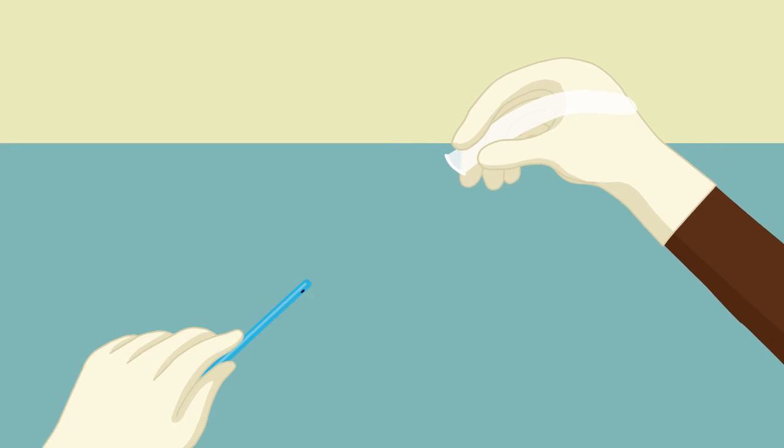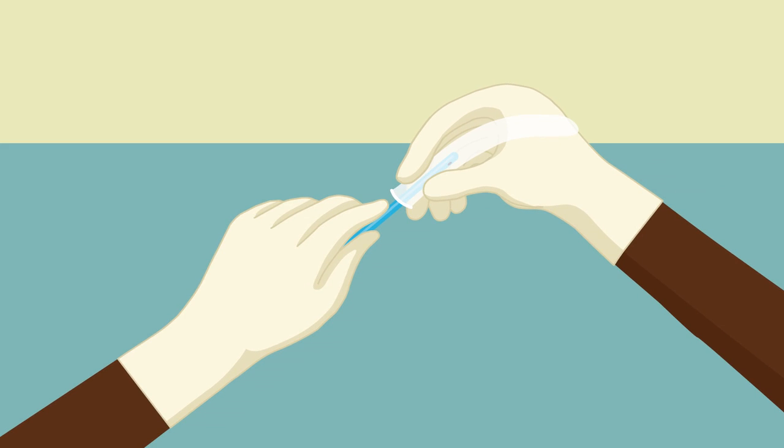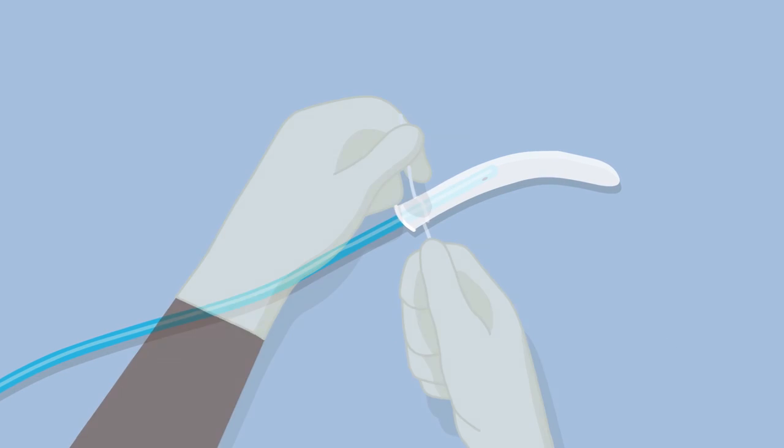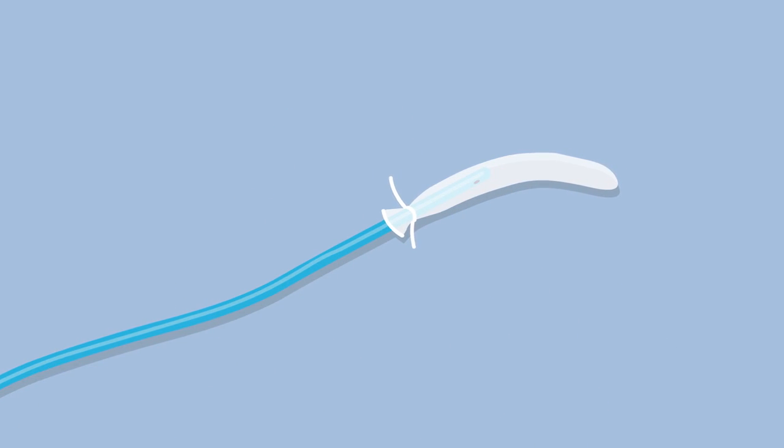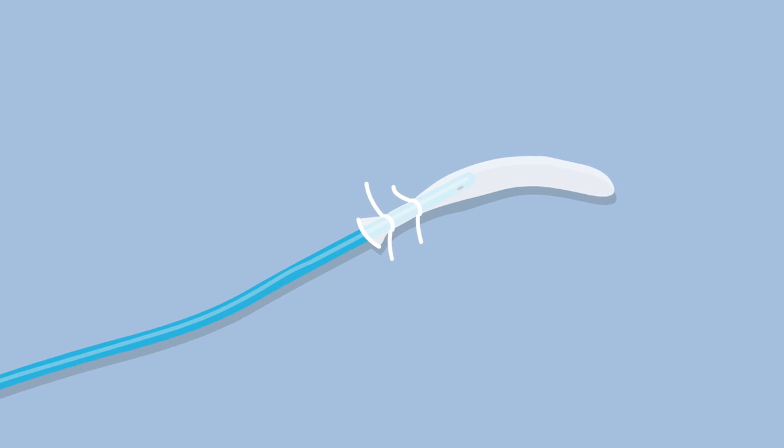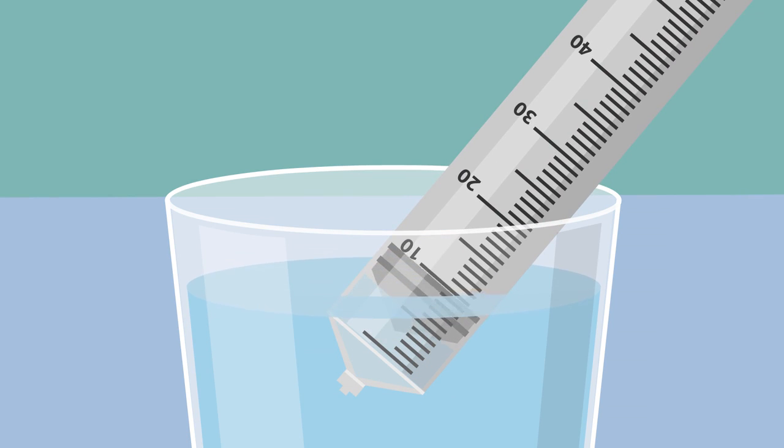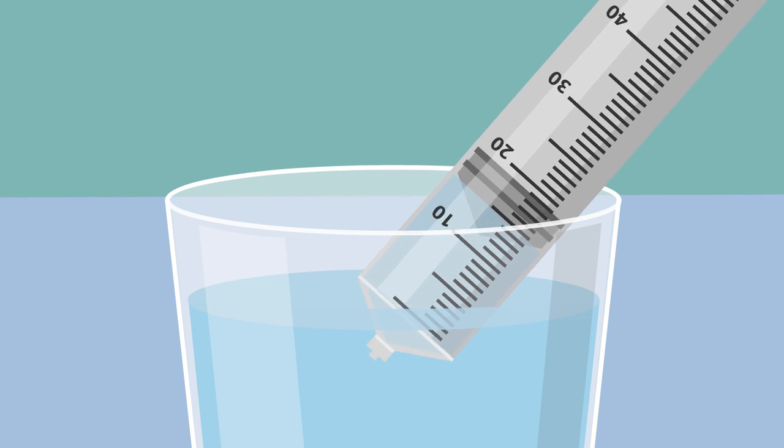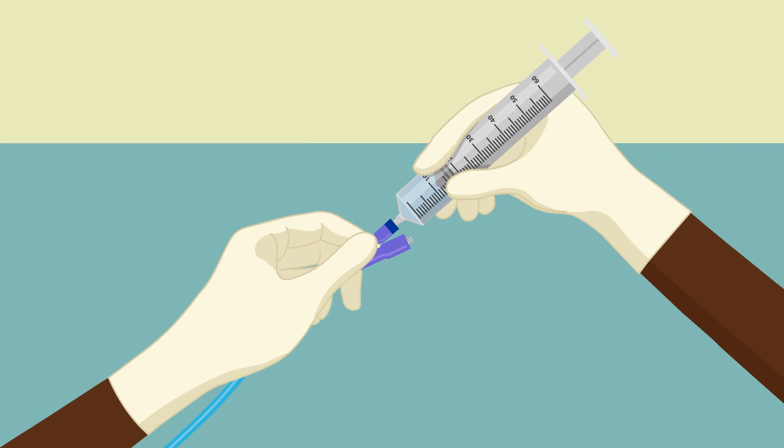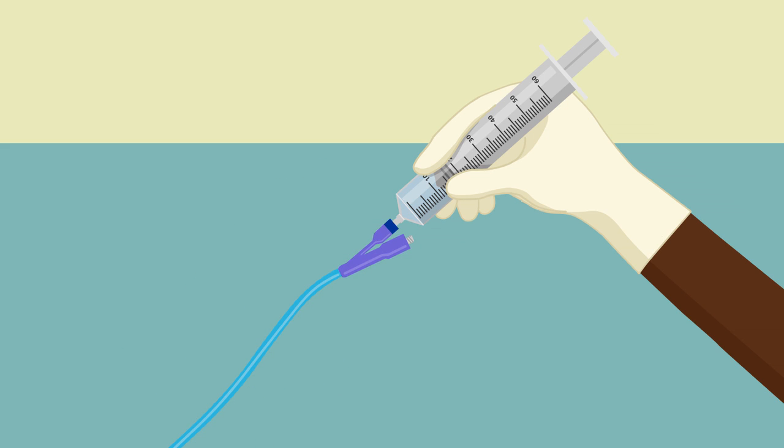She inserts the catheter halfway into the condom balloon. She carefully wraps both pieces of string around the base of the balloon, tying it tightly to the catheter making sure it will not come loose. She draws clean water into the syringe and attaches it to the catheter at the opening used to fill the smaller Foley balloon which is at the top of the catheter.